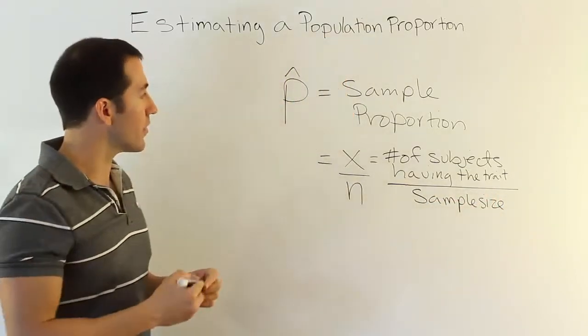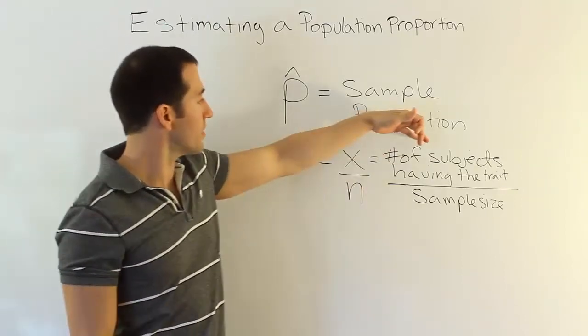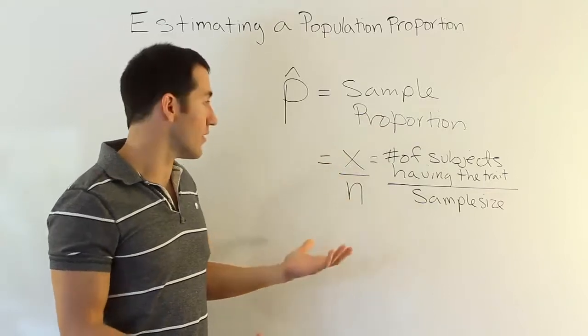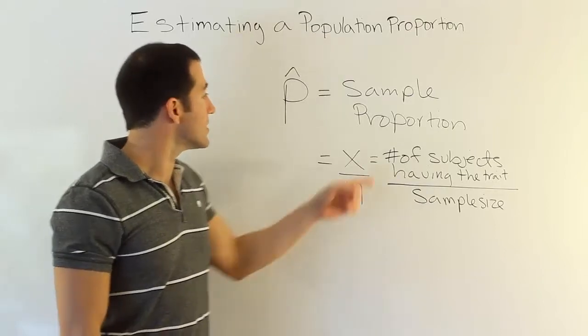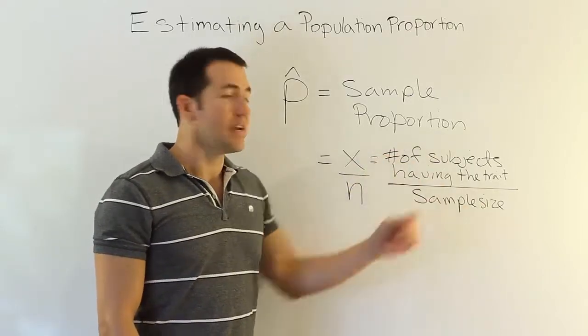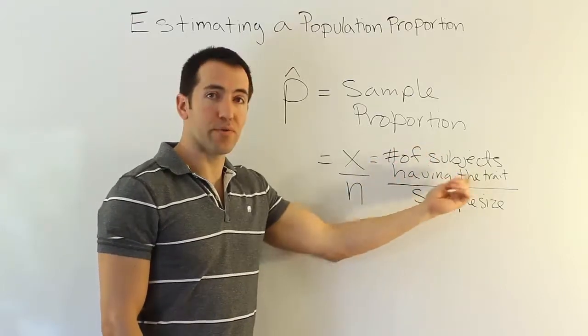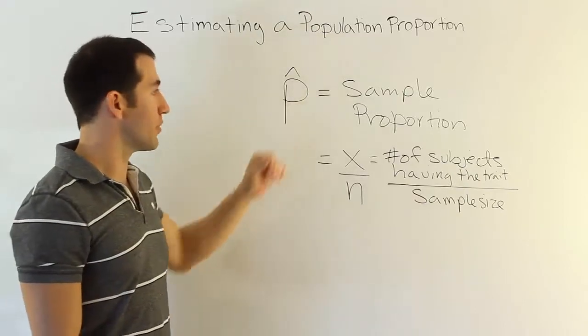So we're familiar with fractions, of course. And so when we divide these two, the x will always have to be less than or equal to n. So the highest number this can achieve is 1 in this case. So it's the number of subjects having the trait over the total sample size. In the case of divorce, it would be the number of couples that were divorced over the total number of couples we looked at. That would be the sample proportion.